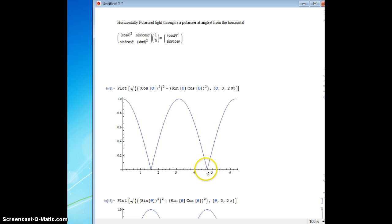And again, we're at zero again at 3π over 2, so there we go. So that's to be expected.